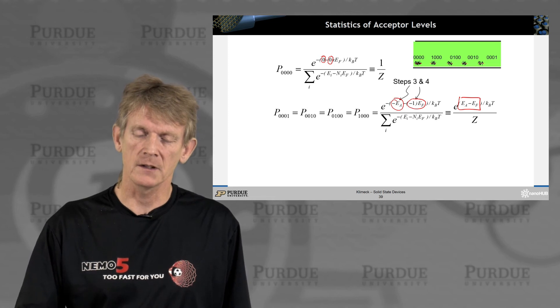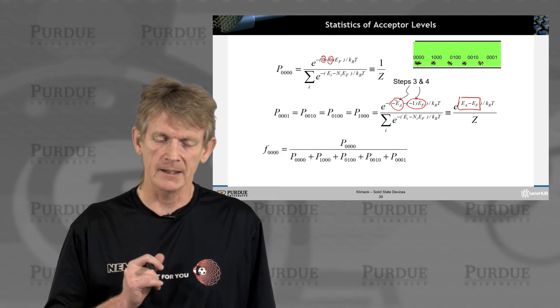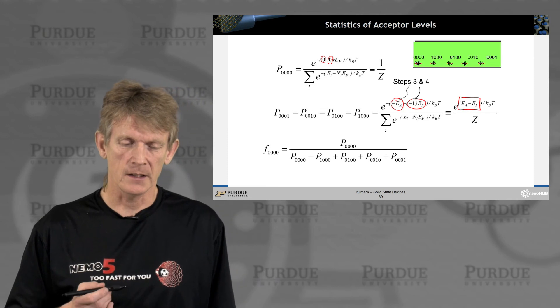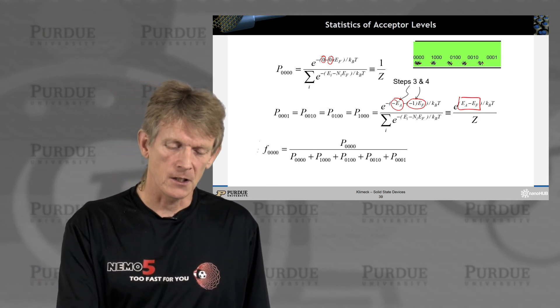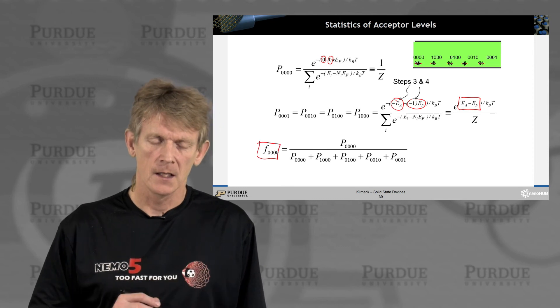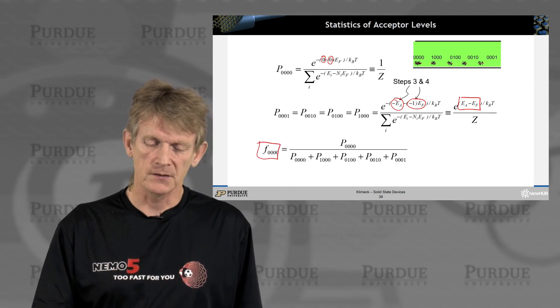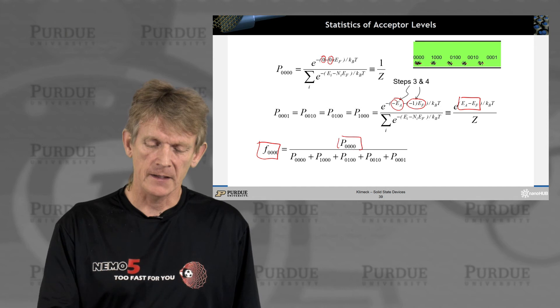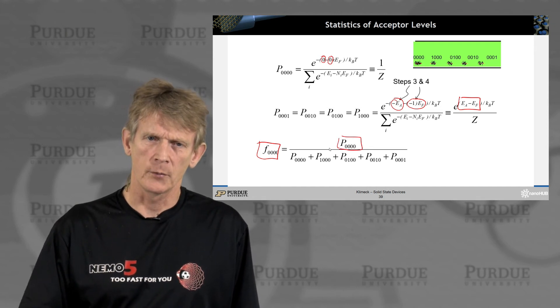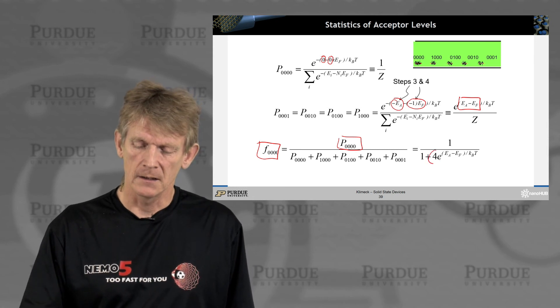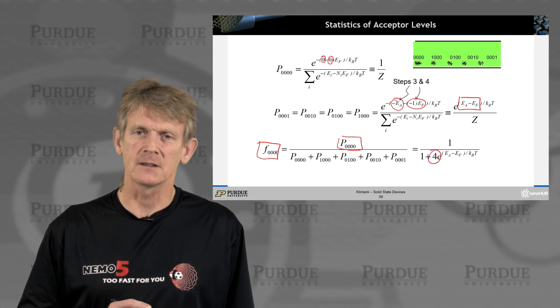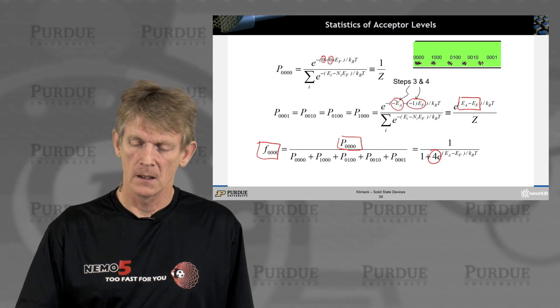Then we can calculate the occupancy of f0000 as the probability of that state divided by all the available probabilities like this in the distribution function, and we'll get an expression that looks like this that has this factor of four in it.